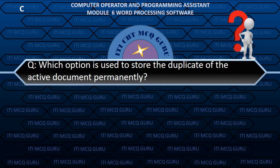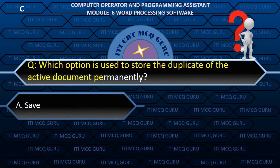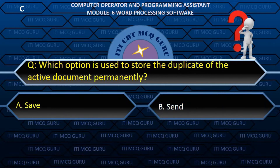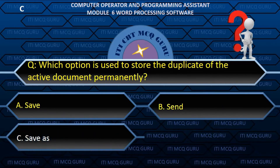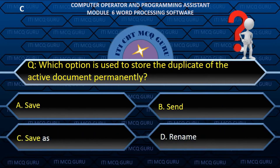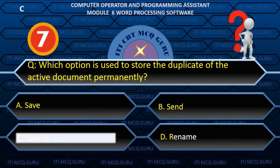Which option is used to store the duplicate of the active document permanently? C. Save As.